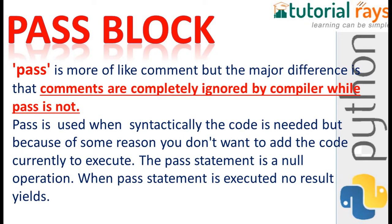You've already seen how break and continue work in Python. Now we will see pass. Pass is kind of like a comment, but the major difference is that comments are completely ignored by the compiler while pass is not. Pass is used when syntactically code is needed but you don't want to add any code currently. Pass is a null operation — when executed, nothing happens.